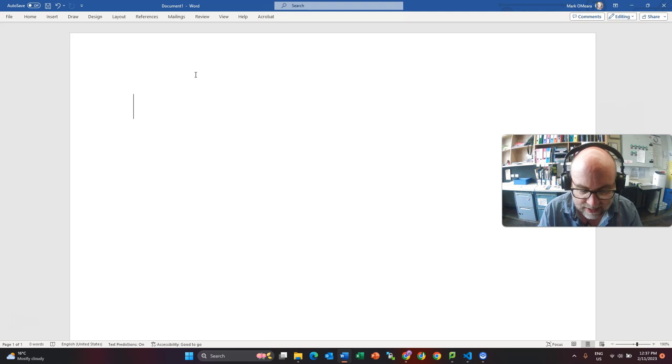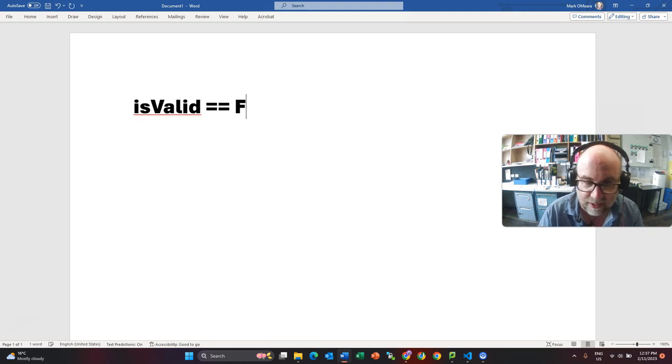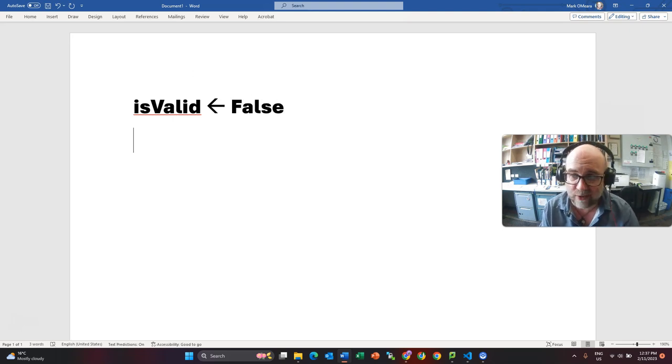So what I am going to do is I am going to set a boolean. And so my boolean, I am going to call is valid, is valid and I am going to set it to equal, assign it to equal false. There we go. So at the moment, their input is not valid.